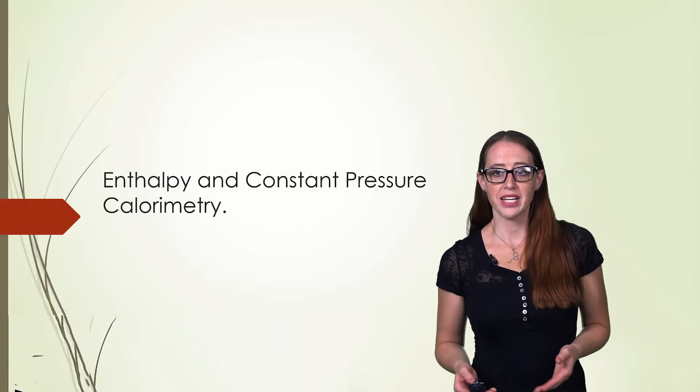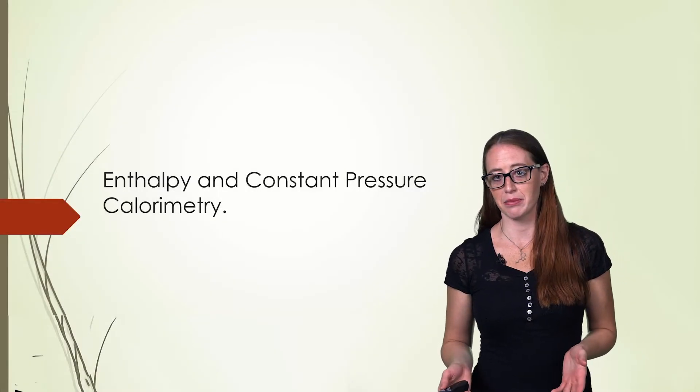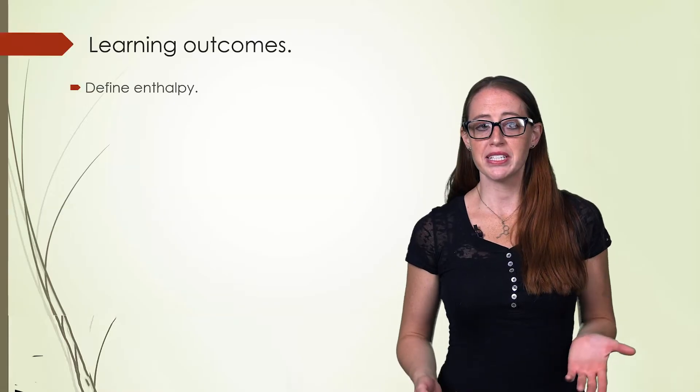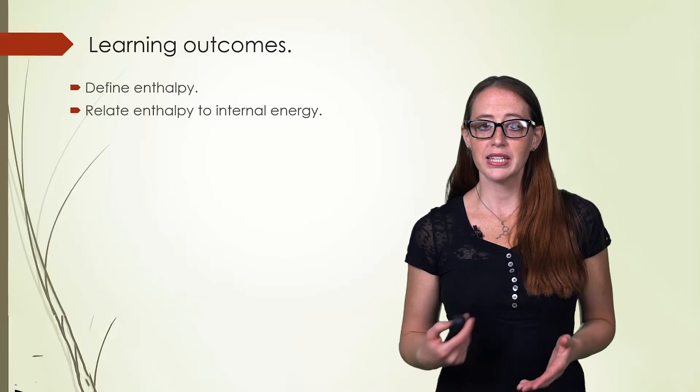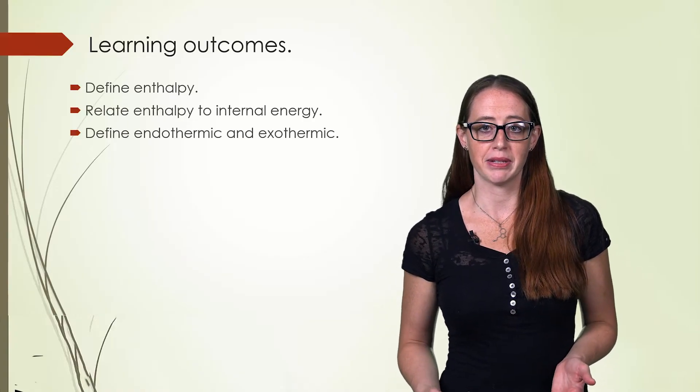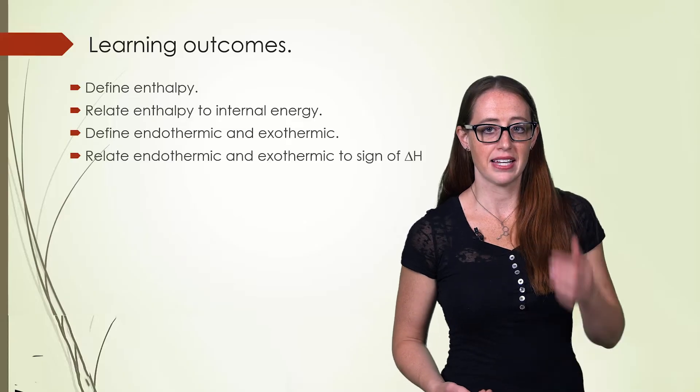Now we're going to introduce a new term and talk about finding E at constant pressure. This will be another type of calorimetry. Here we're going to define enthalpy, relate enthalpy to internal energy, define endothermic and exothermic, and then relate these to the sign of delta H.